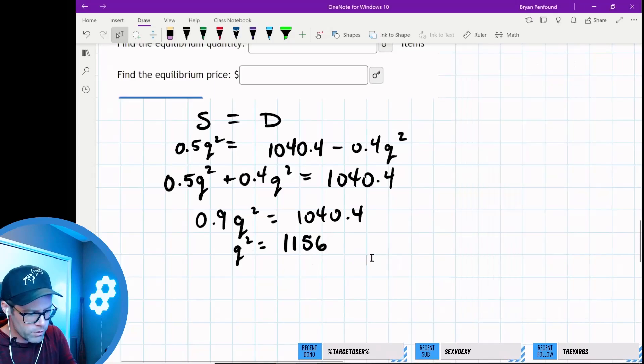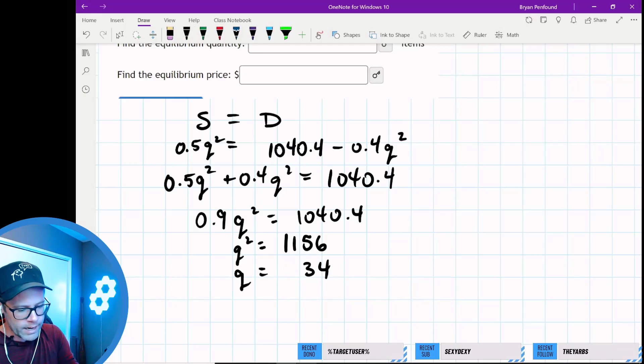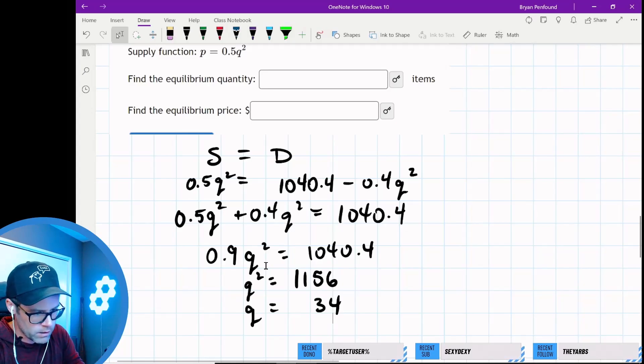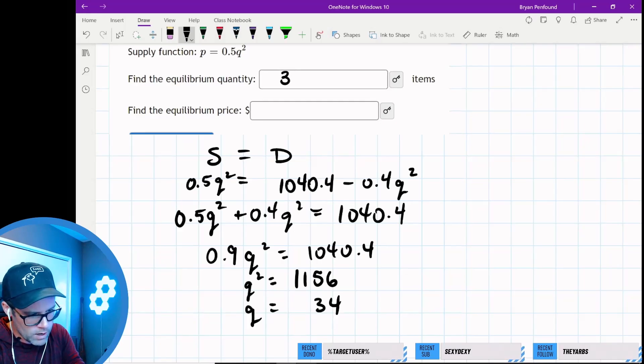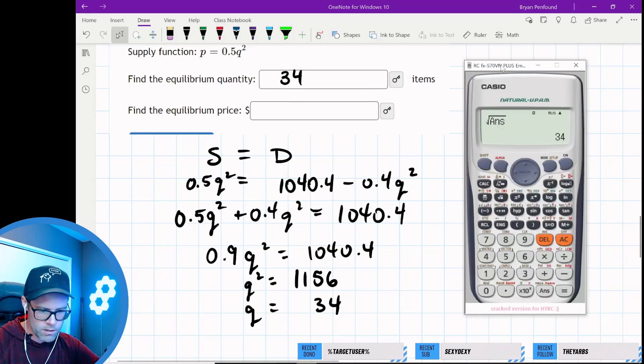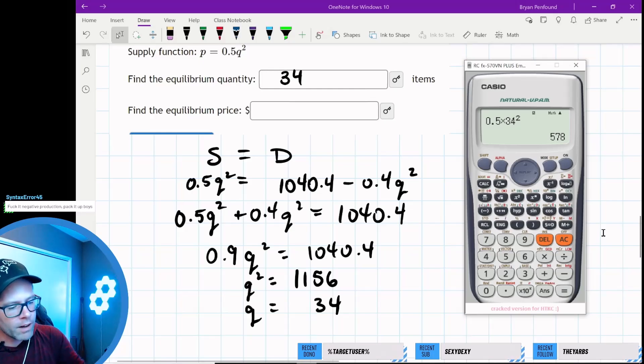Usually I take plus or minus when forcing a square root, but since we want quantity to be positive, we ignore the negative solution—quantity cannot be negative in this applied example. The equilibrium quantity is 34 items. Use the supply function: 0.5 times 34 squared gives the equilibrium price of $578.